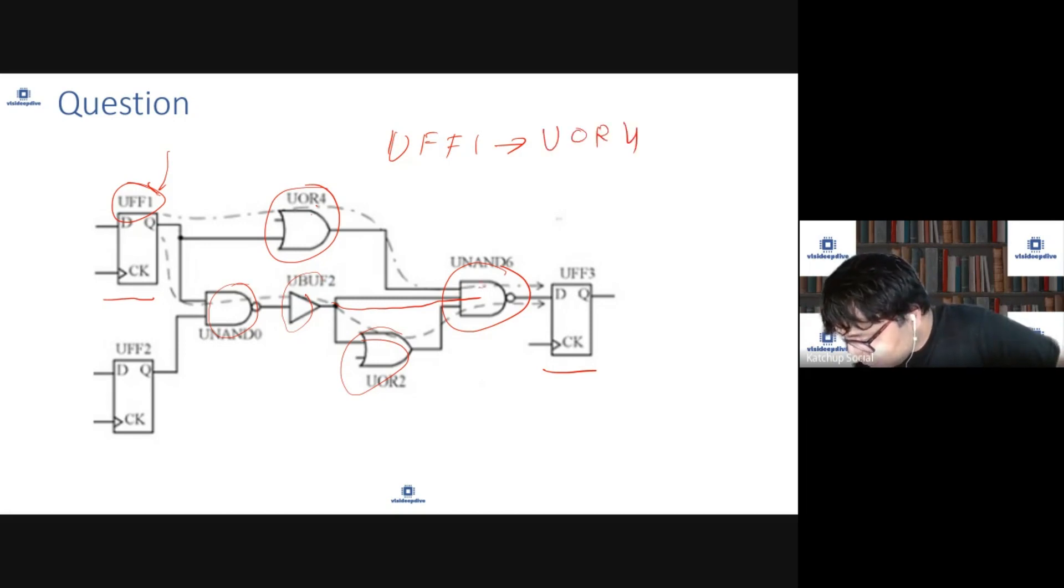Then it is going to this UAND6, and then it is going to UFF3. If I write this, no matter who it is, it is clear which path I'm talking about, right? Because UFF1 to UFF3 has multiple paths, so I'm being specific telling okay, UFF1 path then it goes to UOR4, then it goes to UAND6, and then it goes to UFF3.